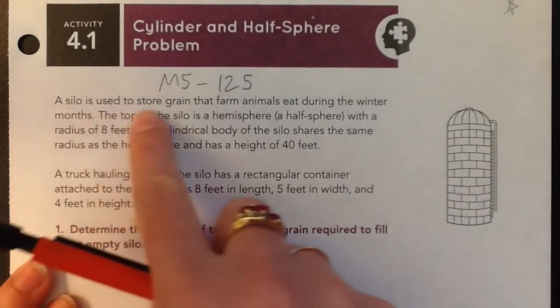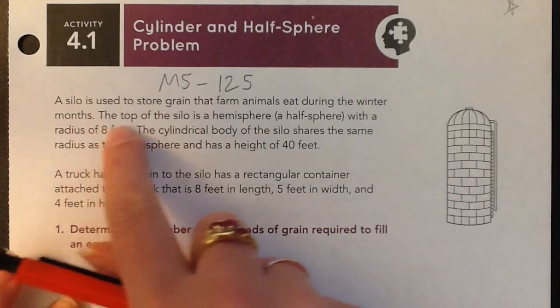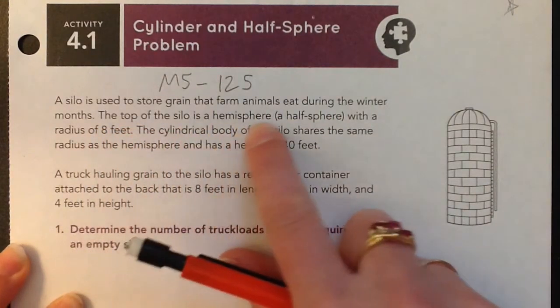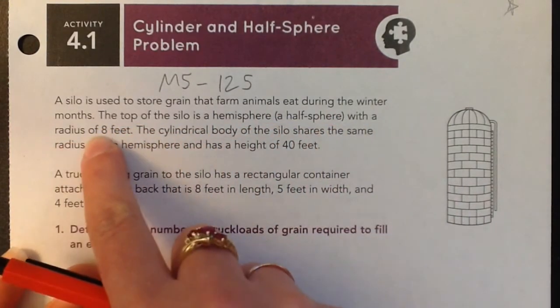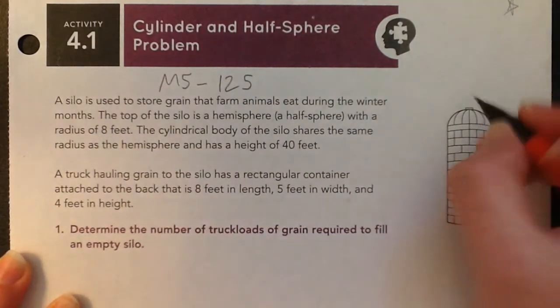A silo is used to store grain that farm animals eat during the winter months. The top of the silo is a hemisphere with a radius of 8 feet. So they just gave us that. So this right here is 8.